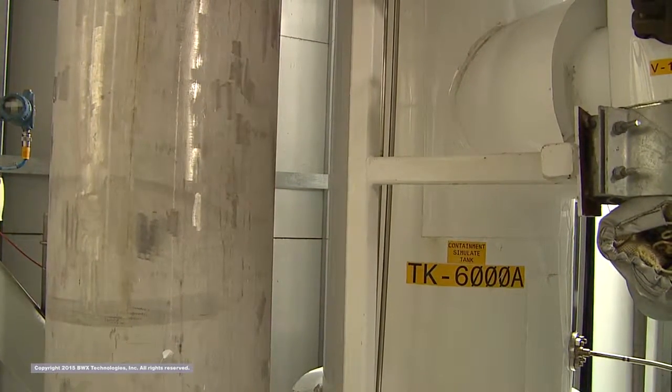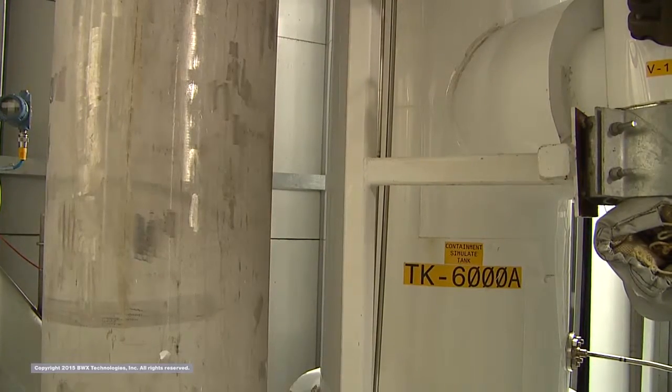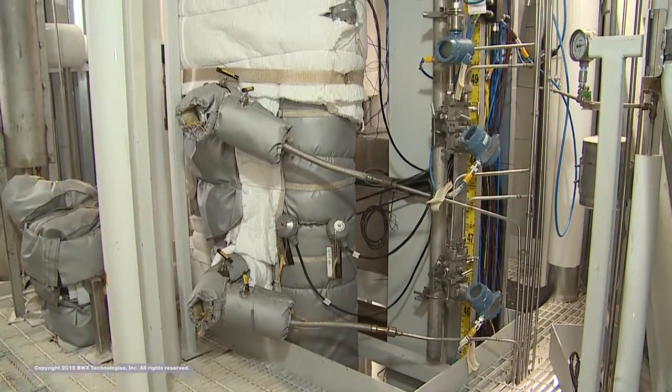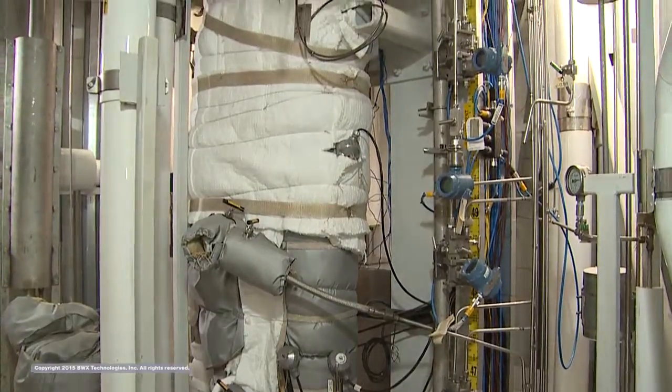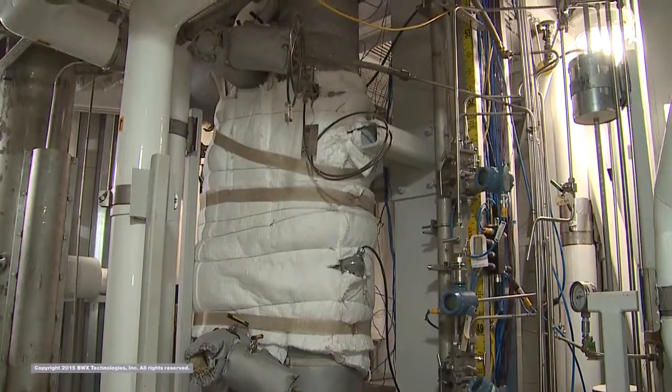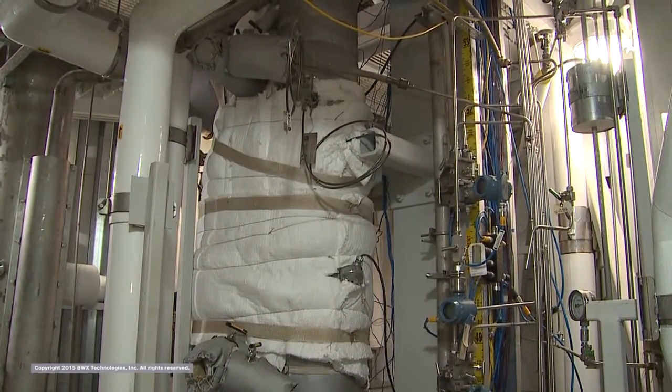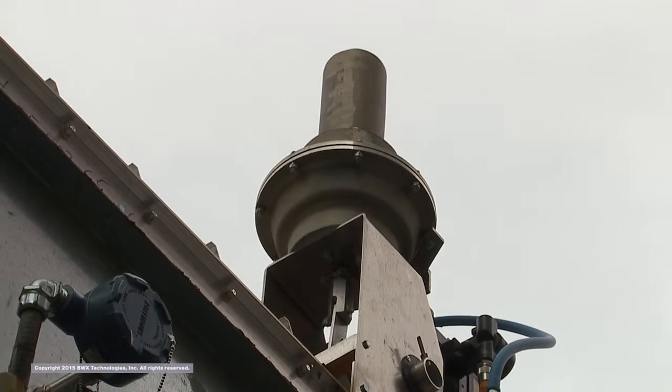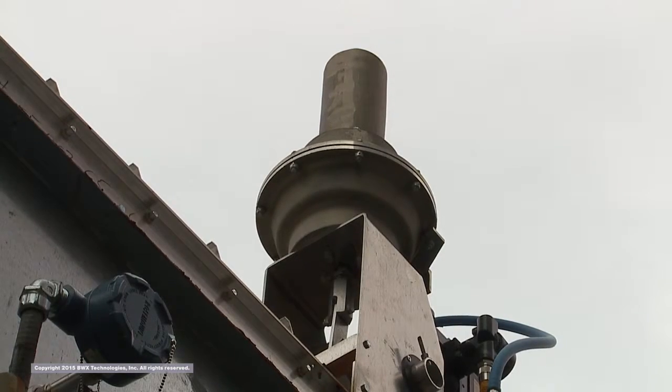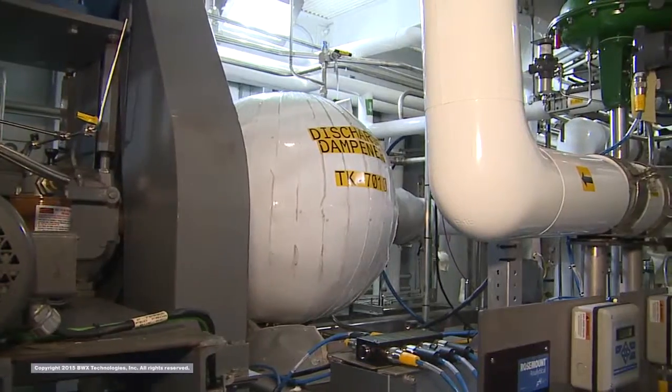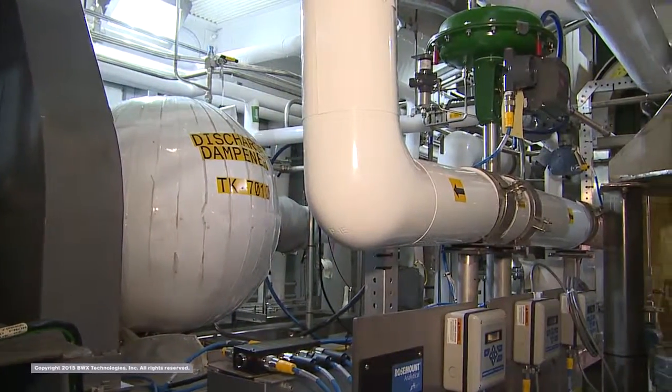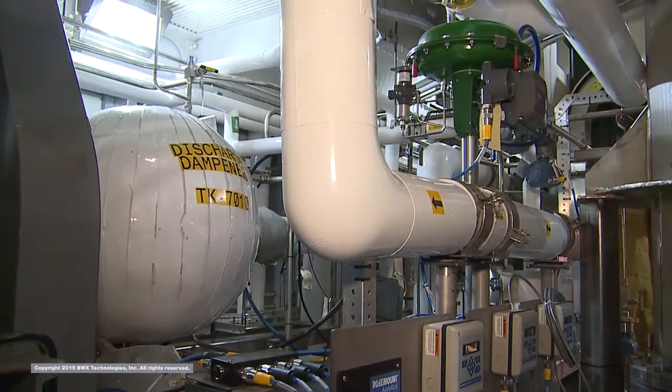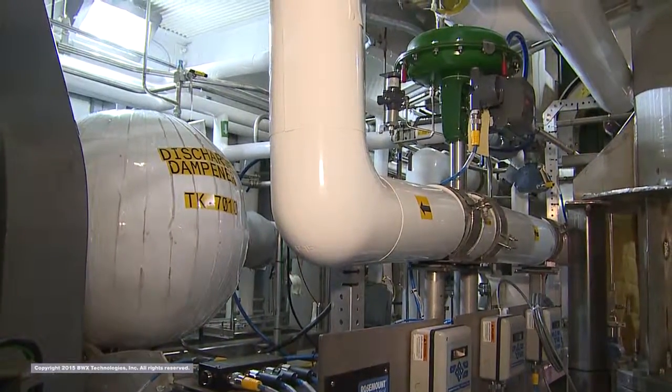The balance of plant includes the feedwater, steam, and condensate systems which are simplified for the IST since power generation is not included. The IST's housing provides several convenient locations for tapping into the steam line for additional testing opportunities. The feedwater flow control valve can be modulated to match the power demand, including simulating load-following scenarios.